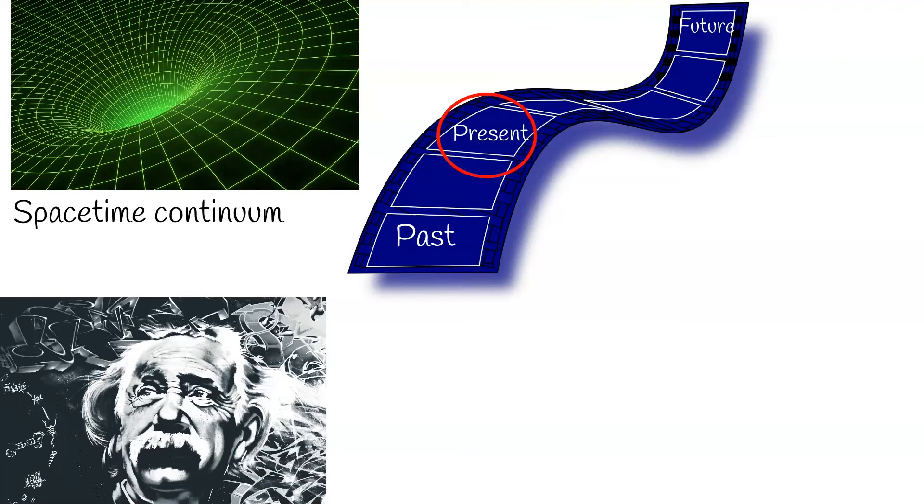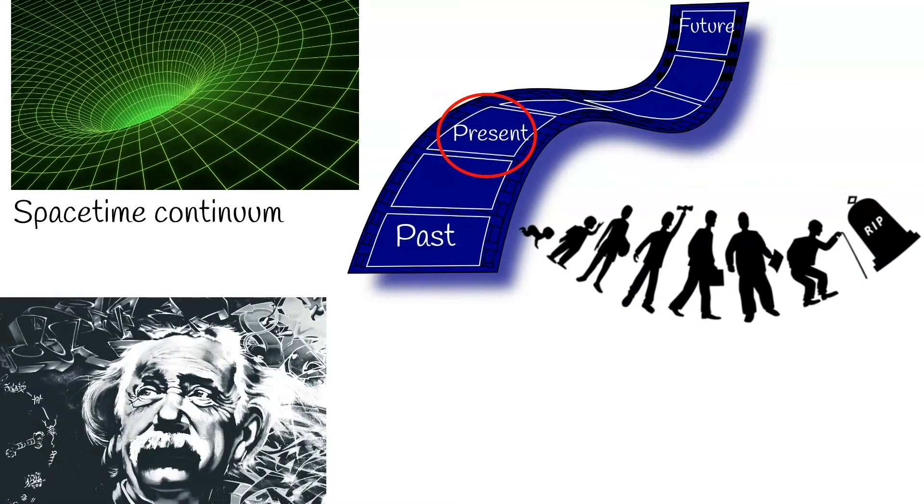When you watching movie, you watching current frame, but whole movie is already defined. And in right perspective you can see any frame as the present. In such vision, time independently doesn't exist. It exists as space-time.